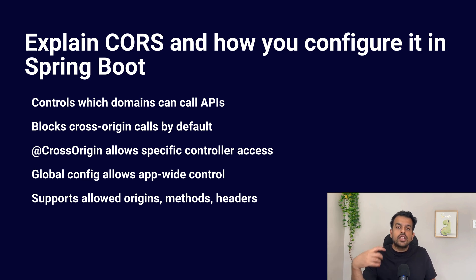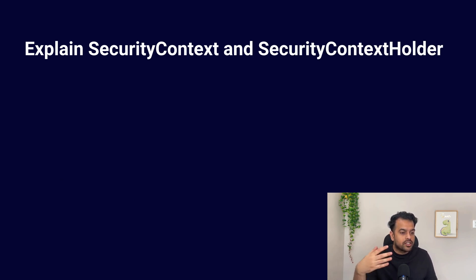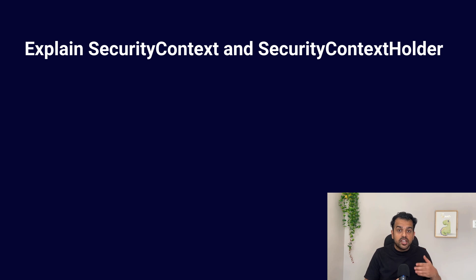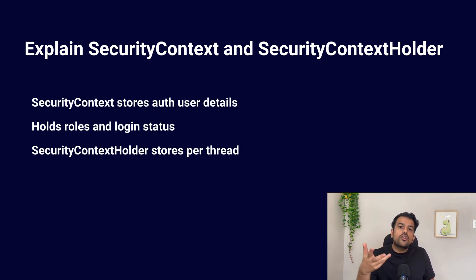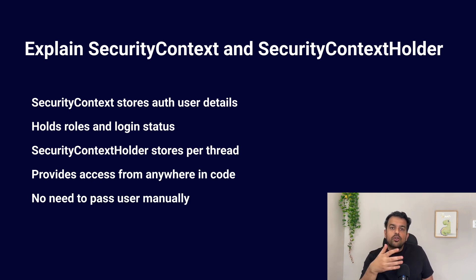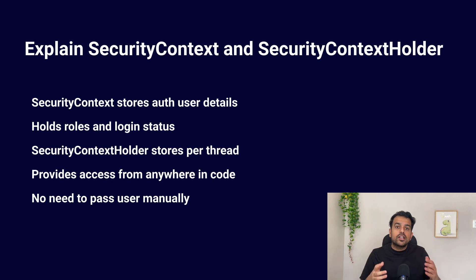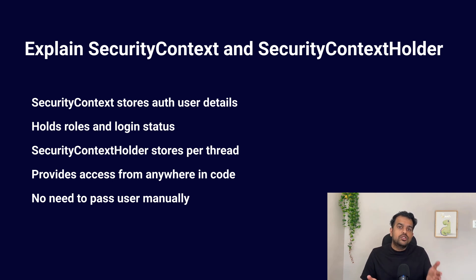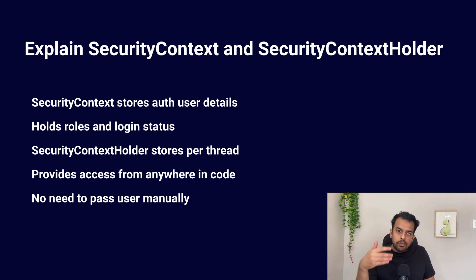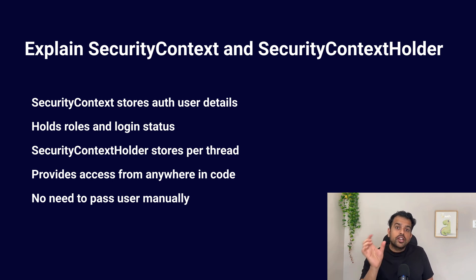The next question is: explain SecurityContext and SecurityContextHolder in Spring Security. Whenever a user is authenticated, their authentication details are stored in something called the SecurityContext. This SecurityContext holds information like who the user is, what their roles and authorities are, and their authentication status. SecurityContextHolder is a class that gives us access to this SecurityContext and stores the context for the current thread of execution.